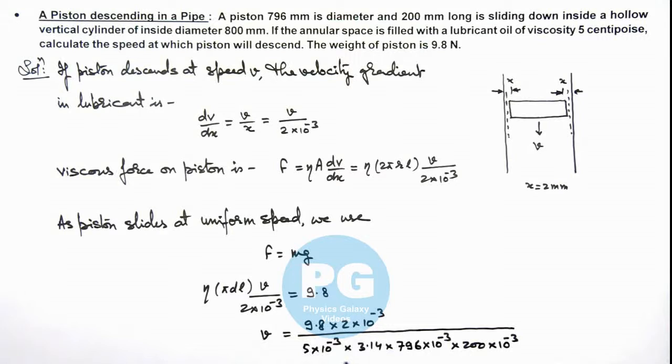So this is the value of speed of piston. Numerically when you calculate this comes out to be 7.841 meters per second. That is the result of this problem.